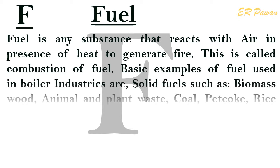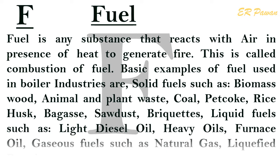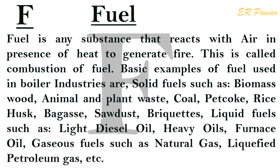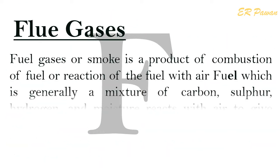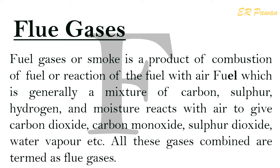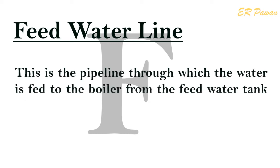F — Fuel: Fuel is any substance that reacts with air in the presence of heat to generate fire. Basic examples of fuel used in boiler industries are: solid fuels such as biomass, wood, animal and plant waste, coal, peat, coke, rice husk, sawdust, and briquettes; liquid fuels such as light diesel oil, heavy oils, and furnace oil; and gaseous fuels such as natural gas and liquefied petroleum gas (LPG). Flue Gases: Flue gases or smoke are a product of combustion of fuel. Fuel — generally a mixture of carbon, sulfur, hydrogen, and moisture — reacts with air to produce carbon dioxide, carbon monoxide, sulfur dioxide, water vapor, etc. All these gases combined are termed flue gases.